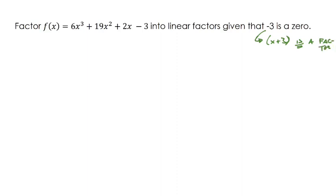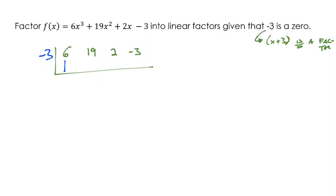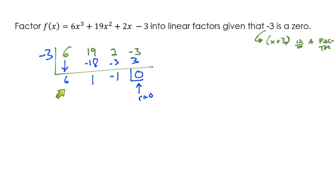Since x plus 3 is a factor, we set up synthetic division dividing negative 3 out of the polynomial. We get: 6 times negative 3 is negative 18, add down to get 1; 1 times negative 3 is negative 3, add down to get negative 1; negative 1 times negative 3 is positive 3, add down to get 0. A remainder of 0 confirms that negative 3 is a zero of this function.